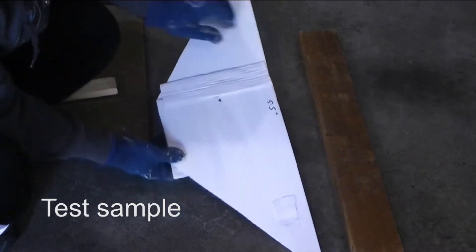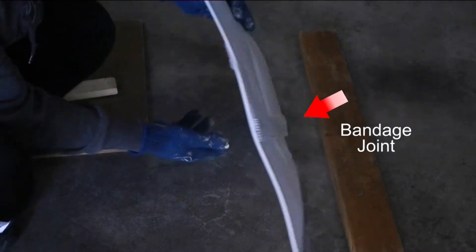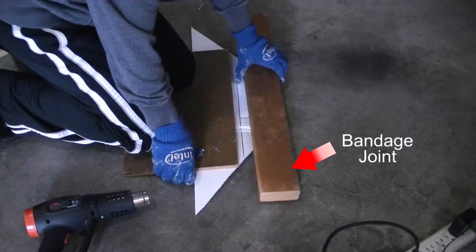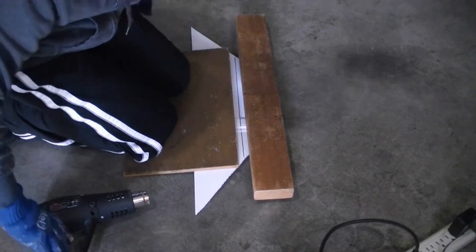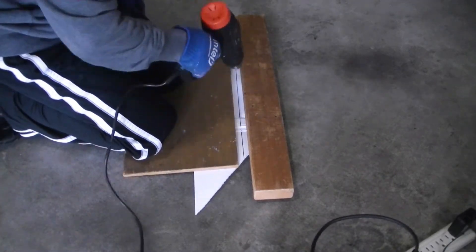These two small corpus pieces, which I call the band-aid here, can further prevent water from getting into the joint. Please note the thickness of the corpus sheets are 6mm.